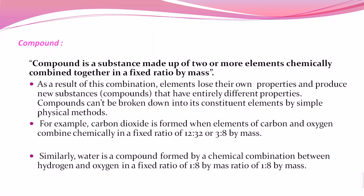A compound cannot be broken down into constituent elements by simple physical methods — only chemical methods can do that. For example, carbon dioxide is formed when carbon and oxygen combine chemically in a fixed ratio of 12:32, which simplifies to 3:8. Similarly, water is formed from hydrogen and oxygen in a fixed mass ratio of 1:8.